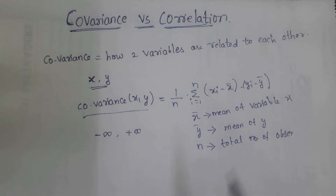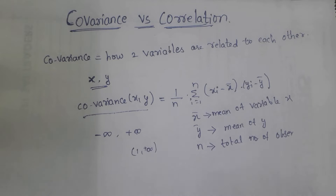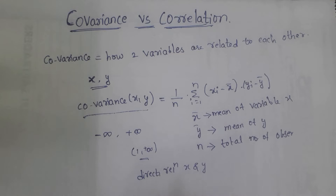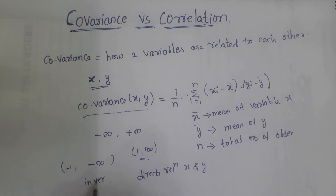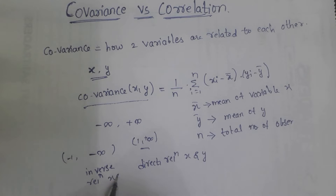Let's explain how two variables are related using covariance. If the covariance value is positive — between 1 and plus infinity — there is a direct relationship between the two variables x and y. If the covariance value is negative — between minus 1 and minus infinity — there is an inverse relationship between x and y.